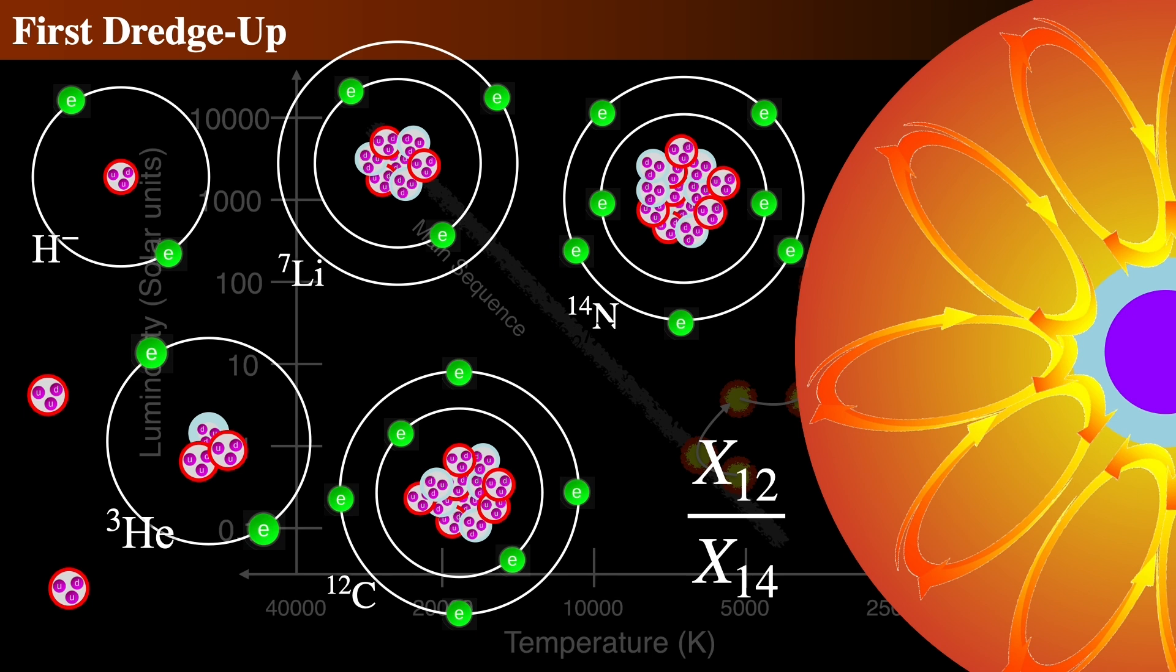This change is called the first dredge-up phase. The first here doesn't imply that all stars do the first and then the second and so on. The first here is another astronomerism. It means the dredge-up of these elements to the surface in this process.